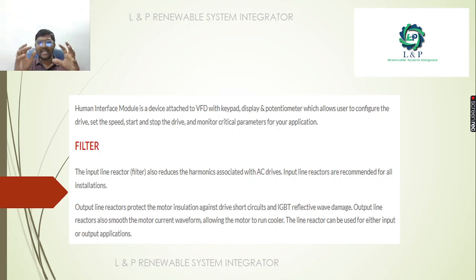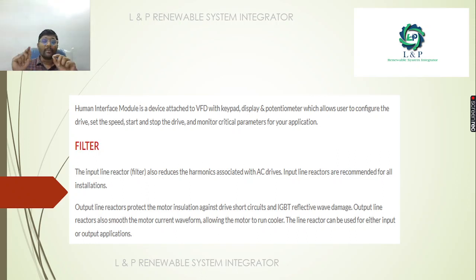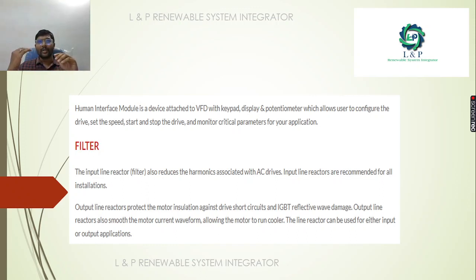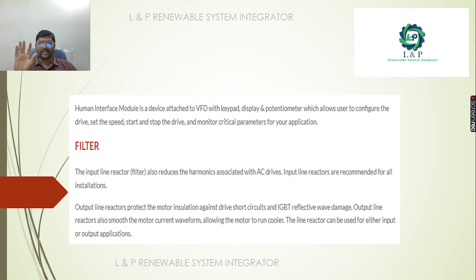Next, we have the HMI screen. On that screen, we can see whatever things we are changing using the buttons present on the VFD. We can see what the frequency is, what the current is, what the startup current is, and the limitations — start limit and end limit — everything we can set in the VFD. With the help of this keyboard, we can operate and see everything in the HMI screens present in the VFDs.